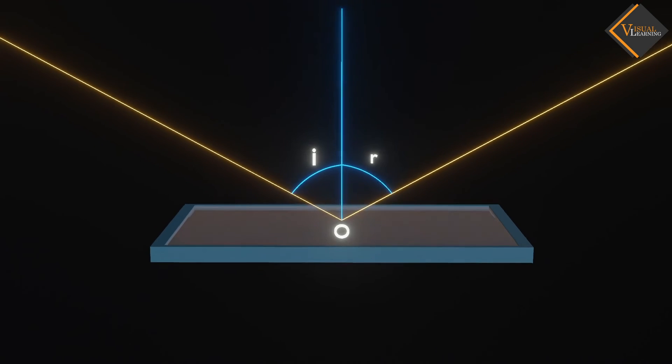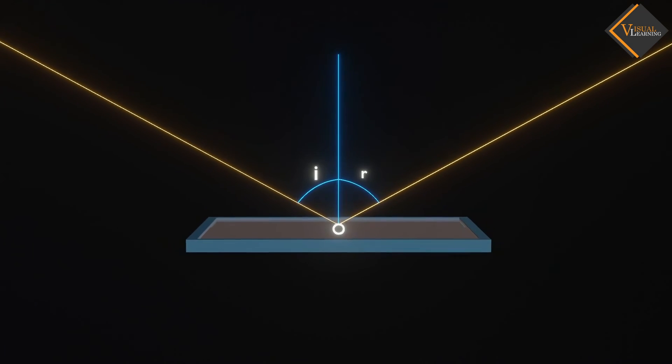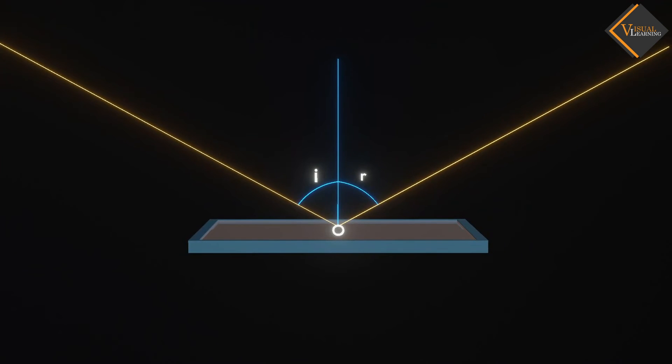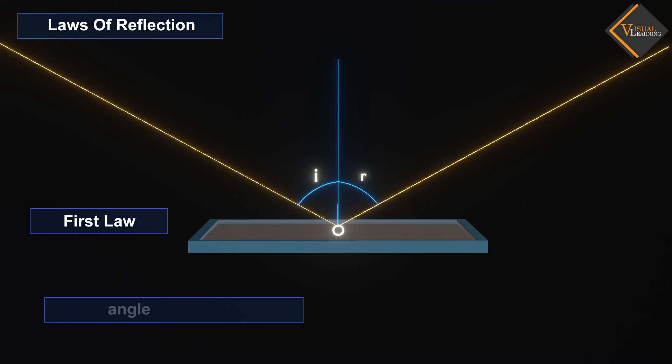To determine the phenomenon of reflection, some laws are given. These laws are known as the laws of reflection. These laws can be stated as: The angle of incidence is equal to the angle of reflection.